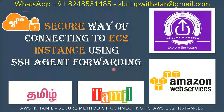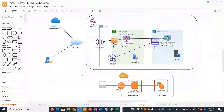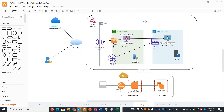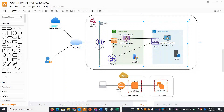First, I will explain the environment. In the environment, we have two subnets in our virtual private cloud. We have a Bastion server. In the private subnet, we have secure machines like the database server, application server, and back-end systems.